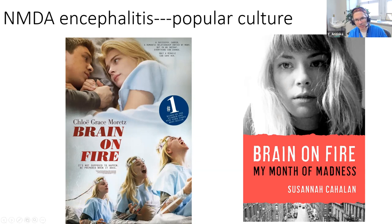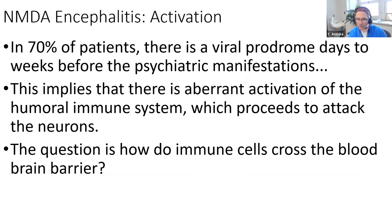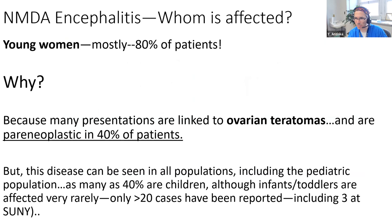In the majority of patients there's a viral prodrome before the psychiatric manifestation, very consistent with an autoimmune phenomenon - probably aberrant activation of the humoral immune system. But if it's in the peripheral blood, how does it penetrate the blood-brain barrier? That's the tricky part to explain.